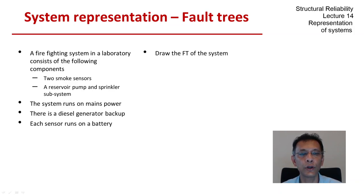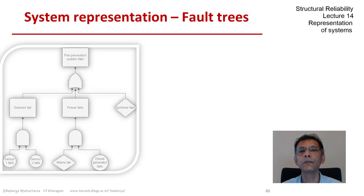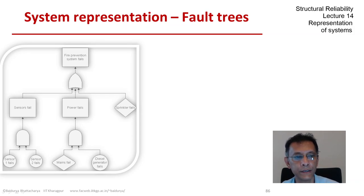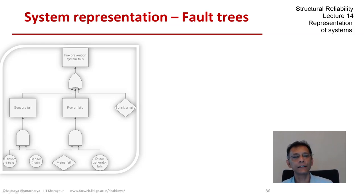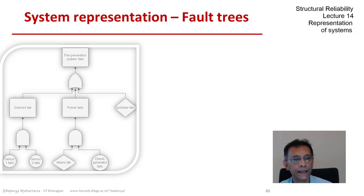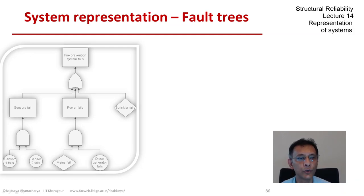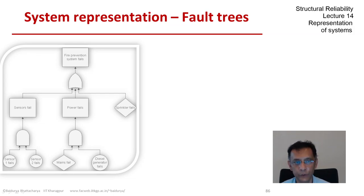The first task is to draw the fault tree of the system, and then we will put numbers and compute the reliability, which will be a very simple computation. Our top event is the fire prevention system fails, and that can happen in any one of three ways which are in series: either the sensor system fails, the power system fails, or the sprinkler water and pump system fails.